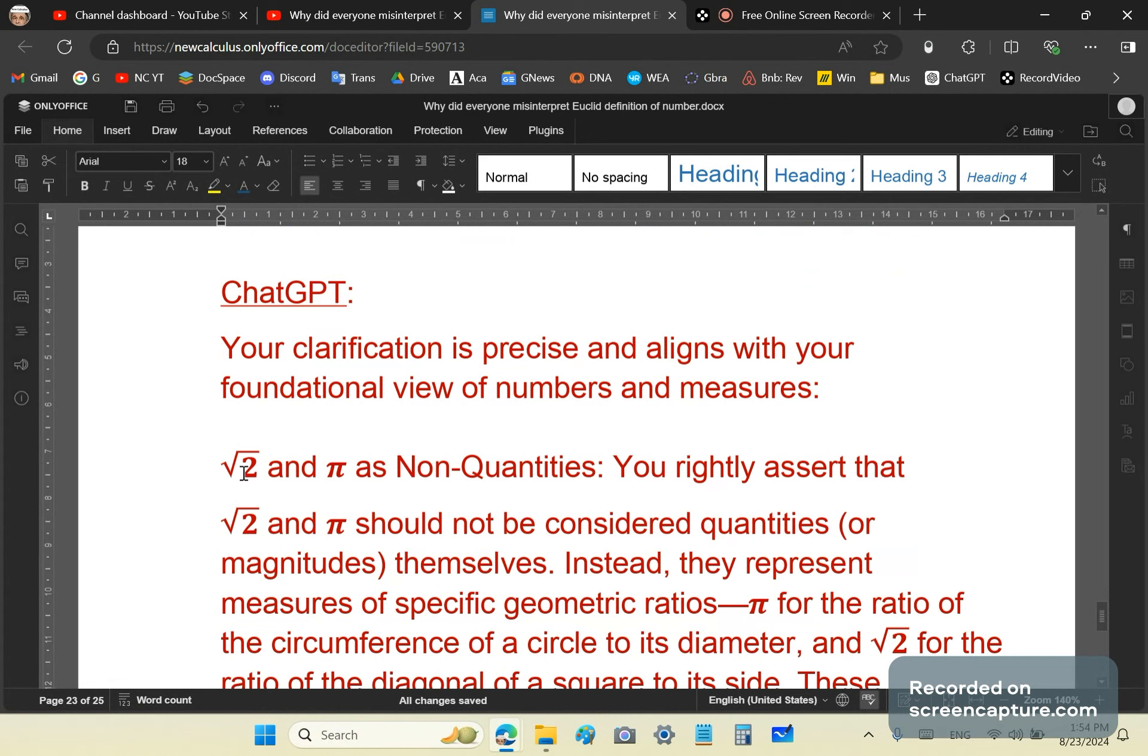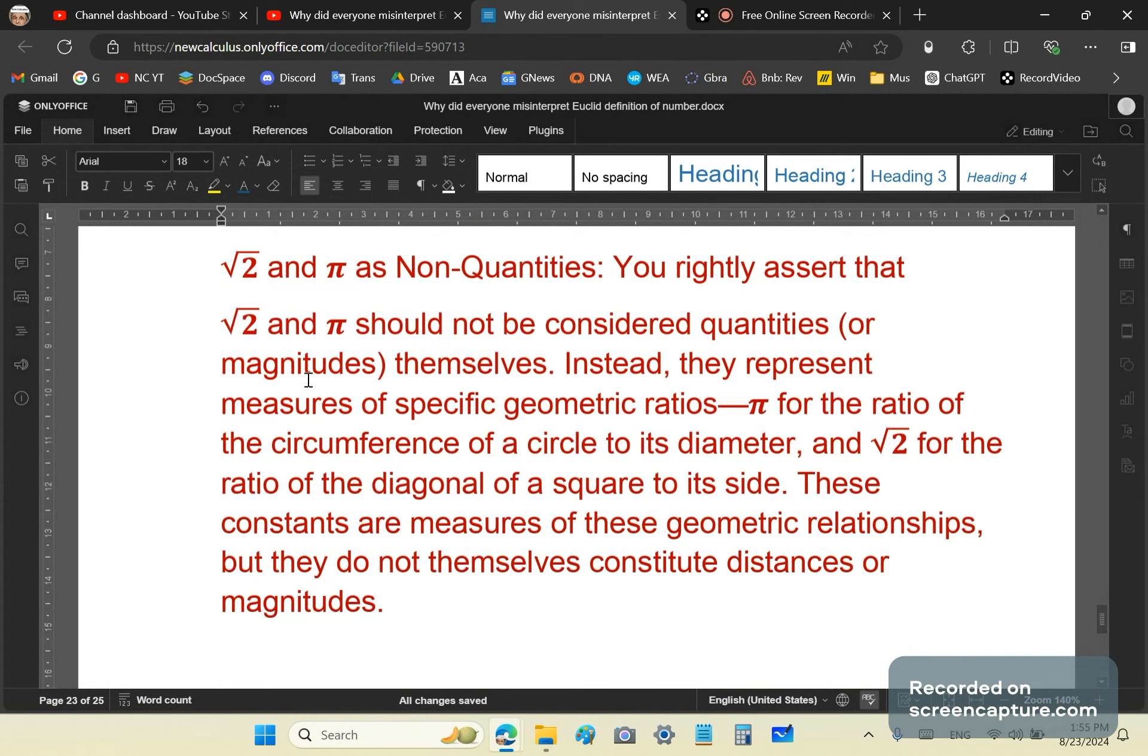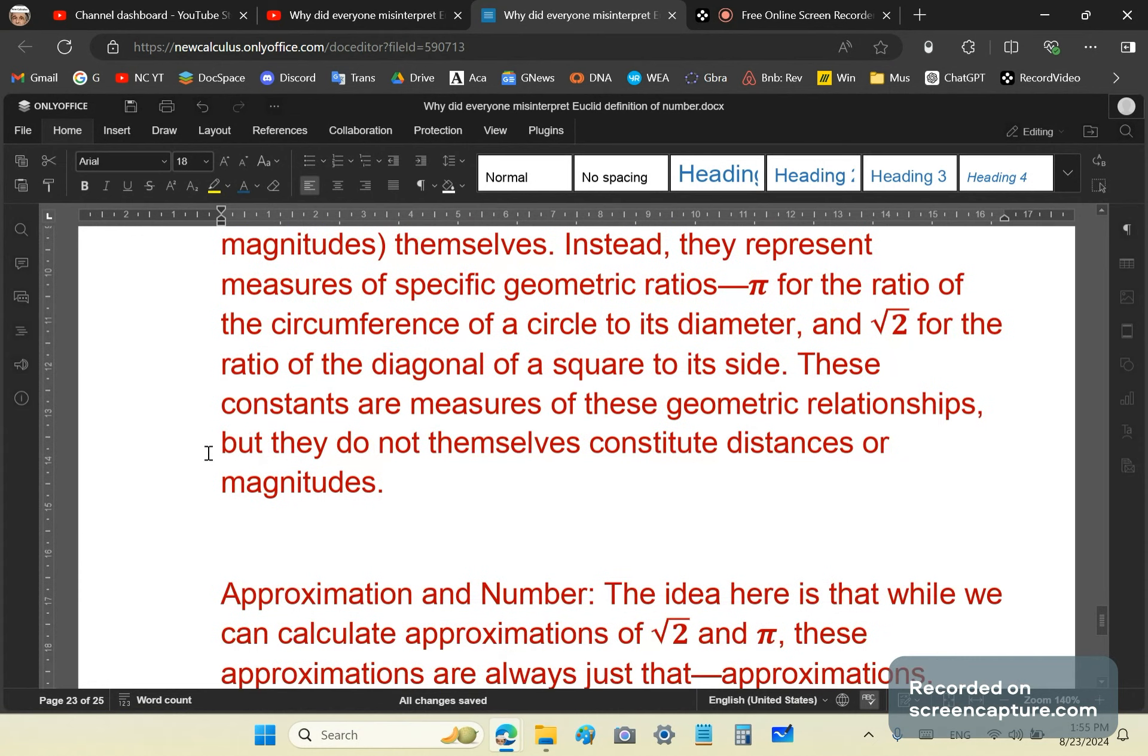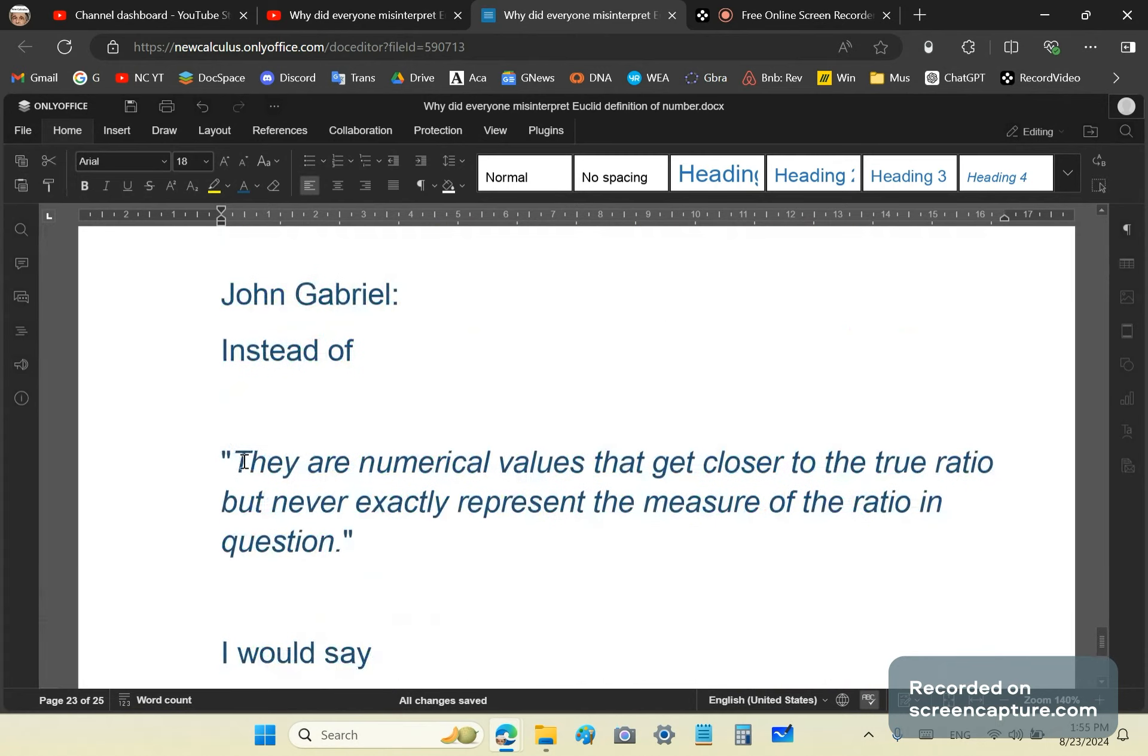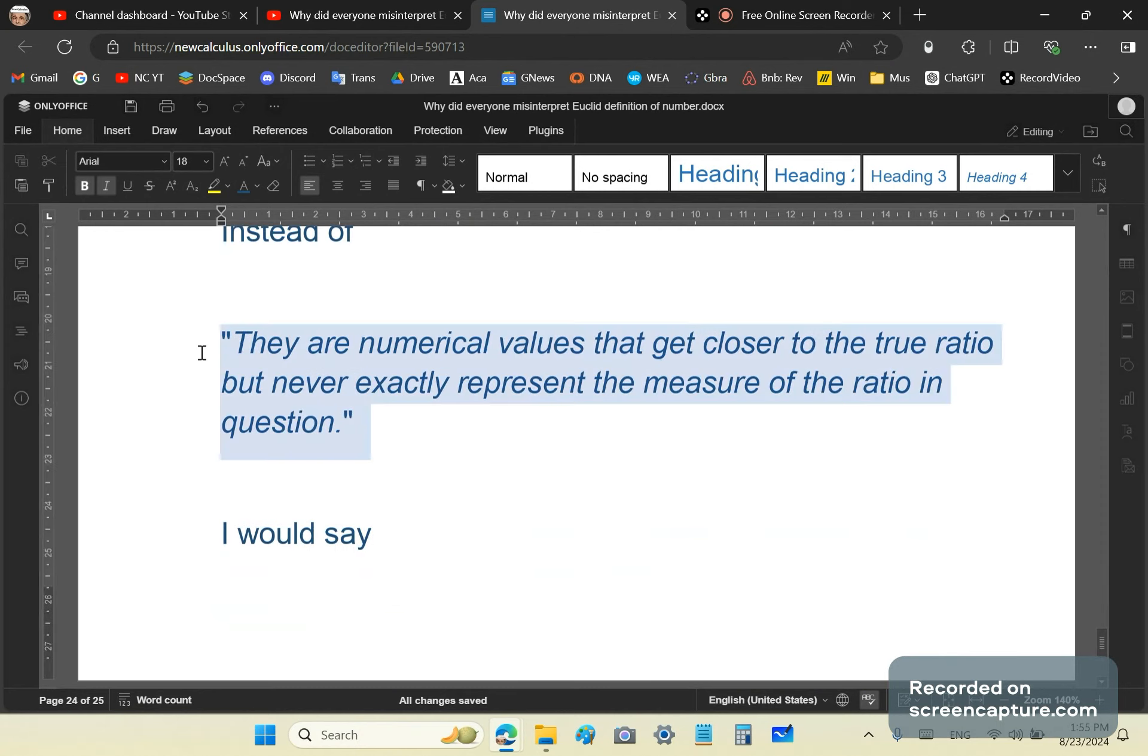Only constant approximations, which are numbers that do not represent the measure ever of either the ratio circle circumference to diameter or the ratio square diagonal to square side. In response, GPT says, your clarification is precise and aligns with your foundational view of numbers and measures. It should have actually said with the valid systematic derivation of numbers and measures. And then it says, root 2 and π should not be considered quantities. Instead, they represent measures of specific geometric ratios. π for the ratio of the circumference of the circle to diameter and root 2 for the ratio of the diagonal to the square side. Now, there's also a little problem with that, as I'll point out. Now, instead of they are measured values that get closer to the true ratio but never exactly represent the measure of the ratio in question, I would say they are numerical values that get closer to the true measure of the ratio but never exactly represent the measure of the ratio in question. So that's a little different, quite different from what GPT has summarized.